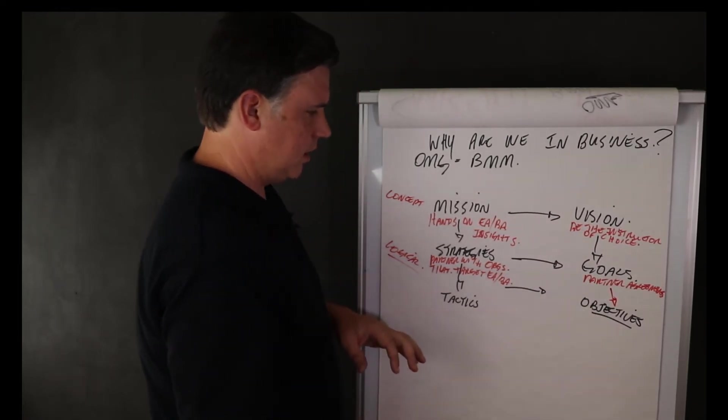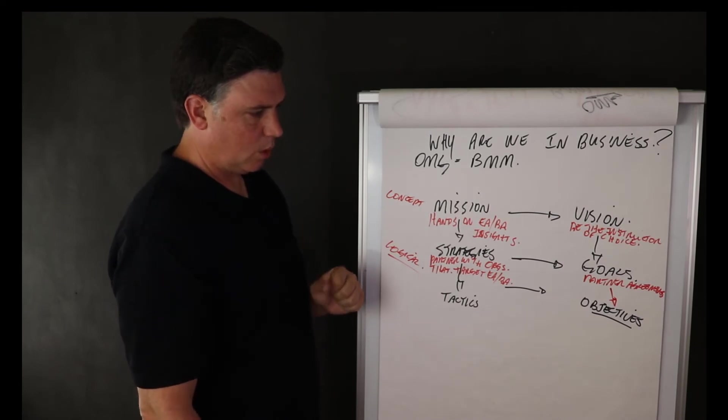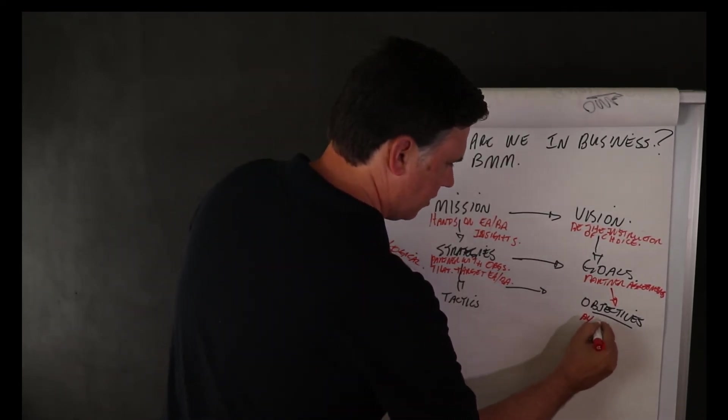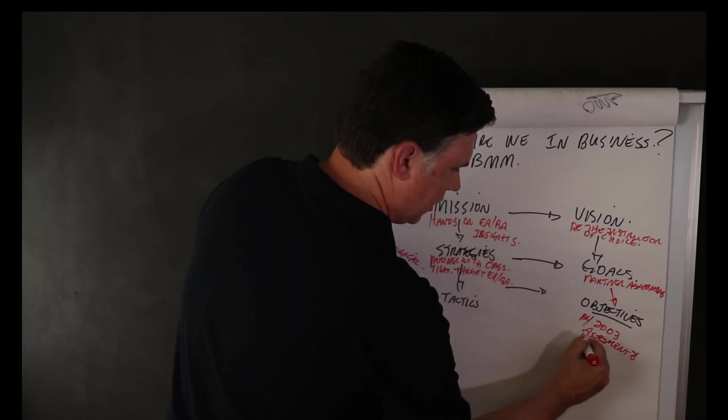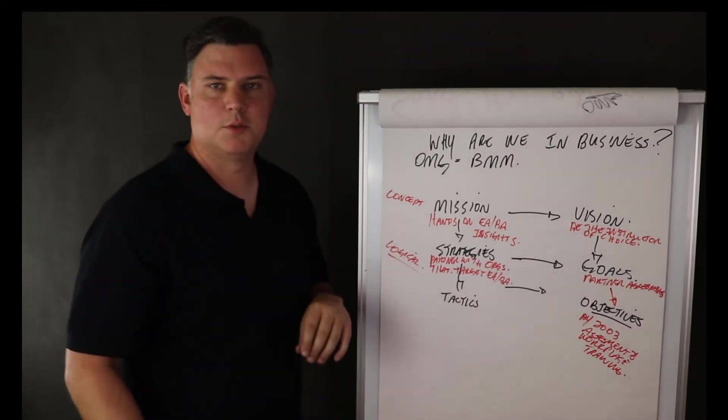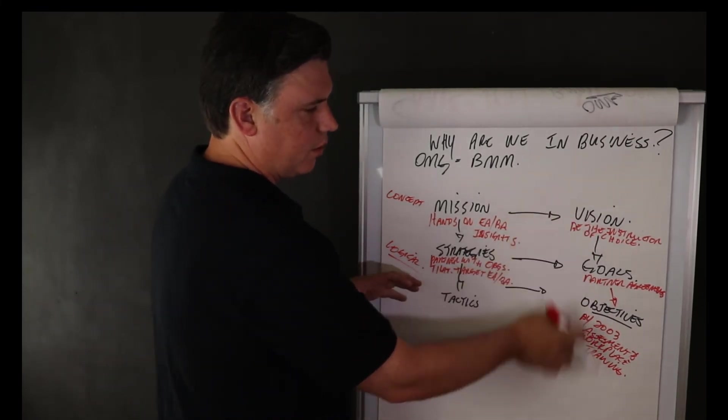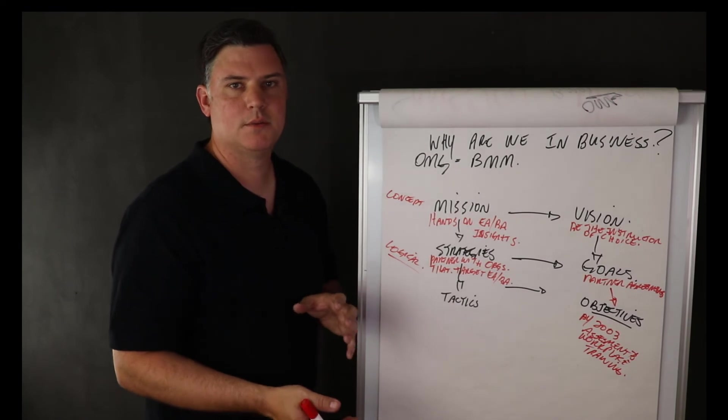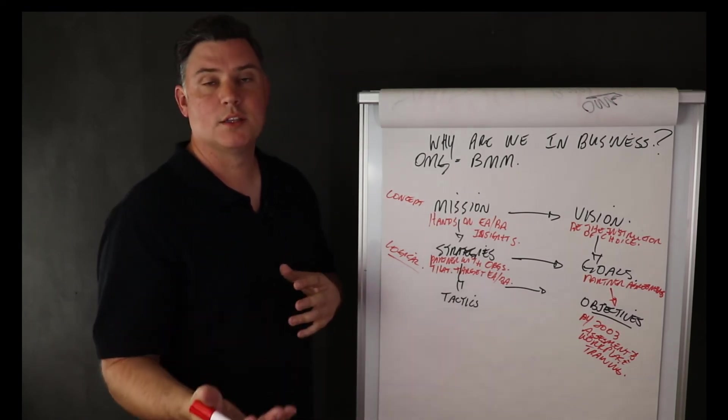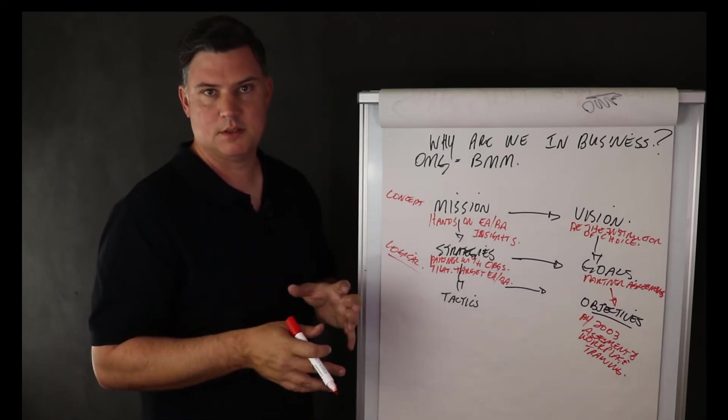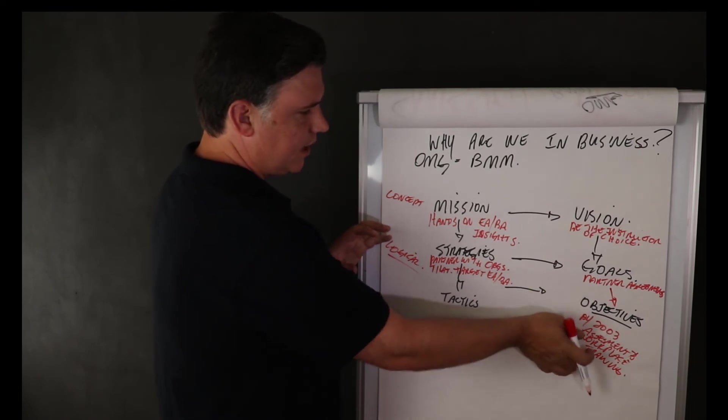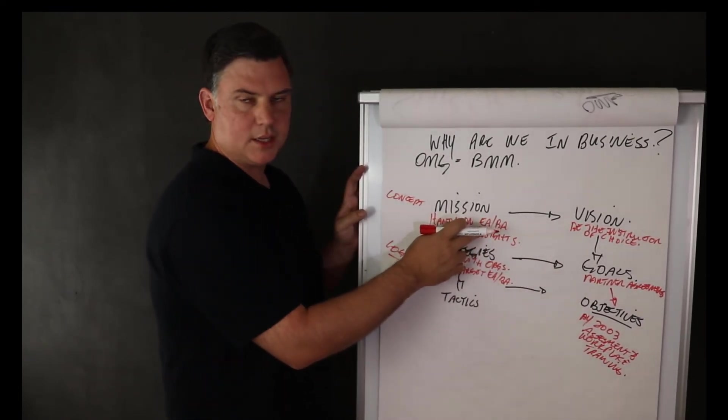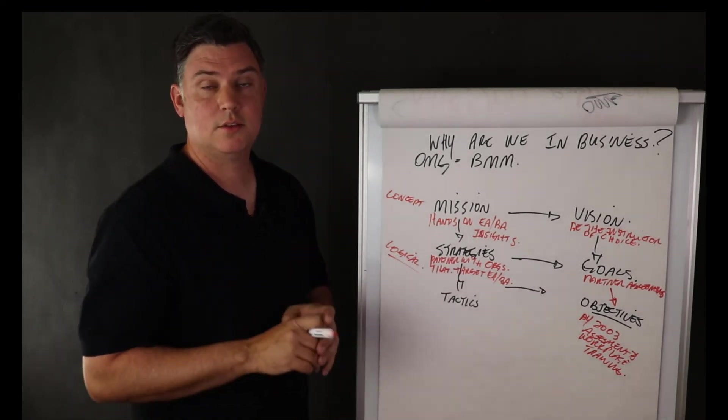And then how do I measure those objectives? Well, I put a date on it. So by 2003, I would have done assessment and workplace training for small groups. And then I just start adding dates to all those different things. I have different partner agreements by certain points in time and consulted in those different business units and those different types of businesses and then picked up systems engineering certifications.